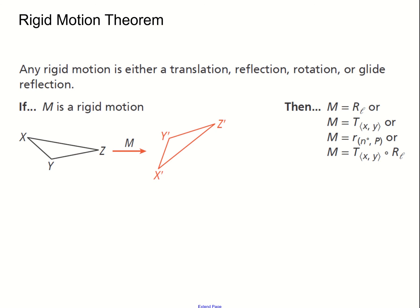Let's discuss another theorem — the Rigid Motion Theorem. It states that any rigid motion is either a translation, reflection, rotation, or glide reflection. So those are the four rigid motions. Basically, this summarizes the four rigid motions into one theorem: if M is a rigid motion, then M could be either one of these four things.